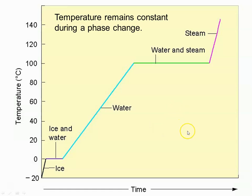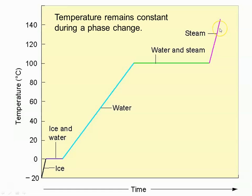Here is the phase change diagram for water again. You'll notice the flat portion at 100 degrees C corresponds to the boiling point of water. We're going from liquid water, and that's water in its liquid phase, and then during the phase change between water and gas — which we call steam — the temperature remains constant as it absorbs energy until all of the water has turned to steam. If it continues to absorb energy, the temperature goes up. Going in reverse, steam condensing to water, you again have this flat portion where the phase change is taking place.